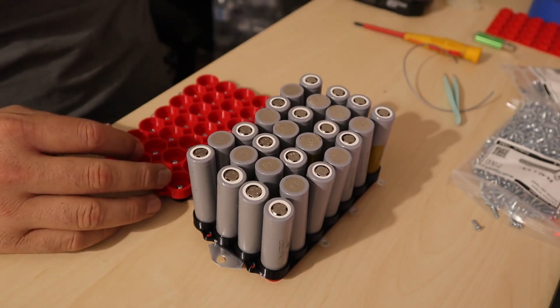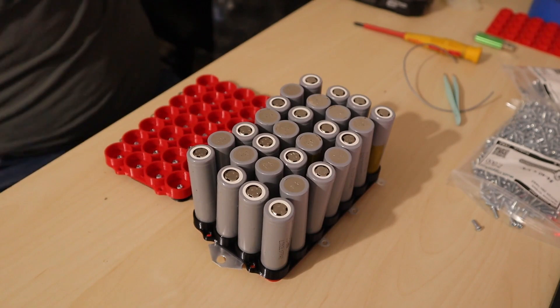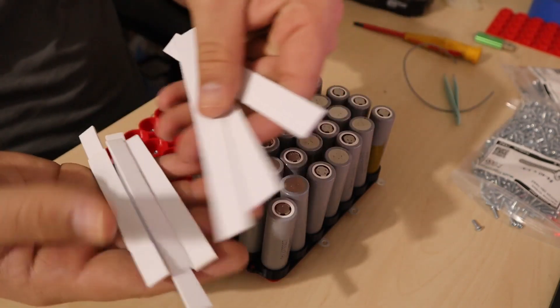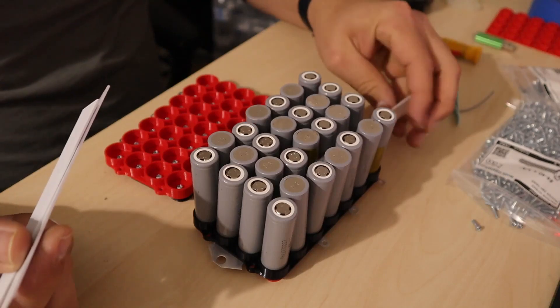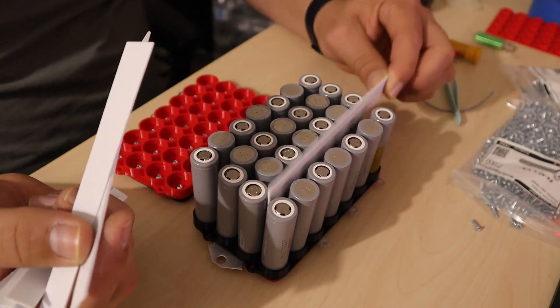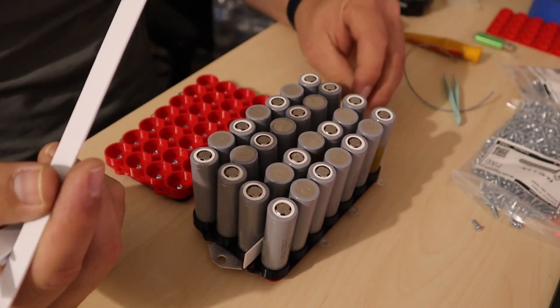A little trick that I do to help me with the assembly is I take a few pieces of plastic, and what I do is place them in between the cells making a little grid. This is going to help me do the assembly faster.